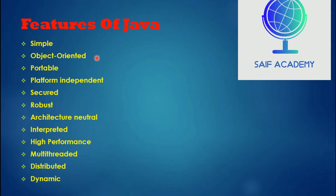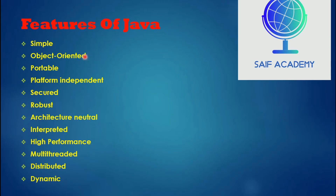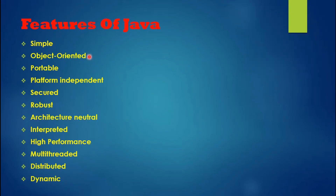Java is object-oriented. Object-oriented programming is a programming technique that takes concepts from the real world. It uses principles such as objects, classes, inheritance, and polymorphism — these are key concepts of object-oriented programming (OOP).